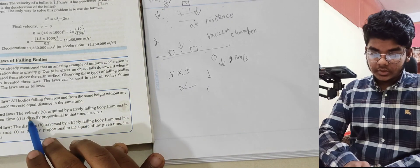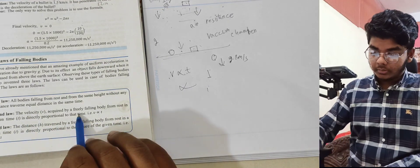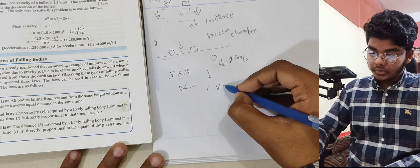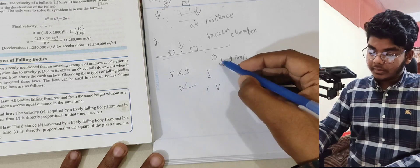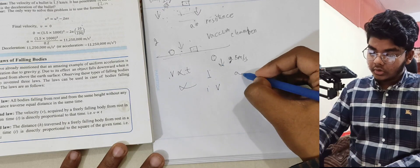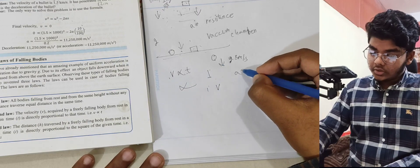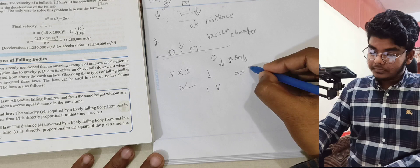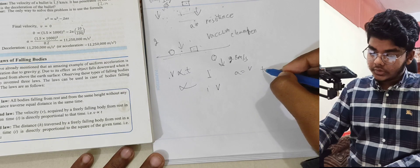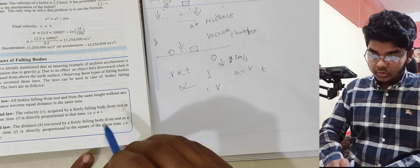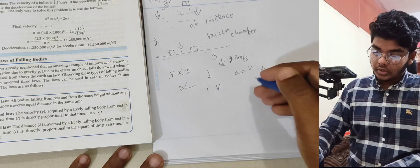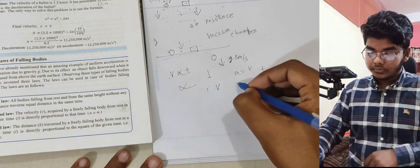At a given time t, velocity is directly proportional to t. As time increases, velocity increases. The rate of change of velocity with time is 9.8 m/s² — that is the acceleration due to gravity.